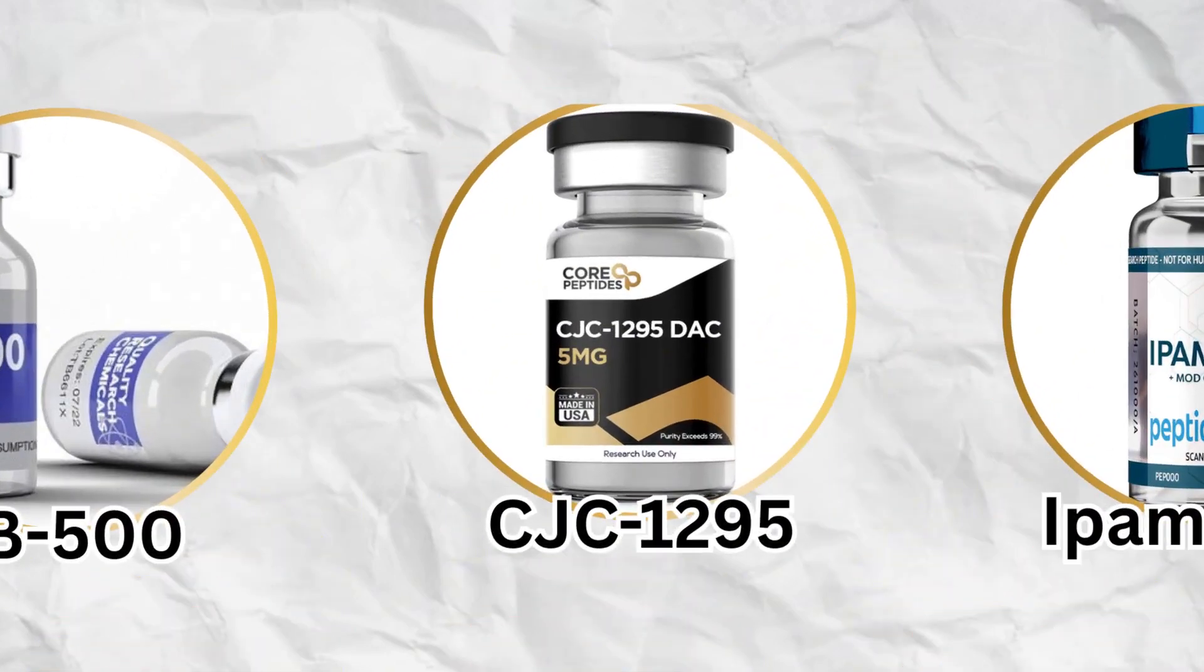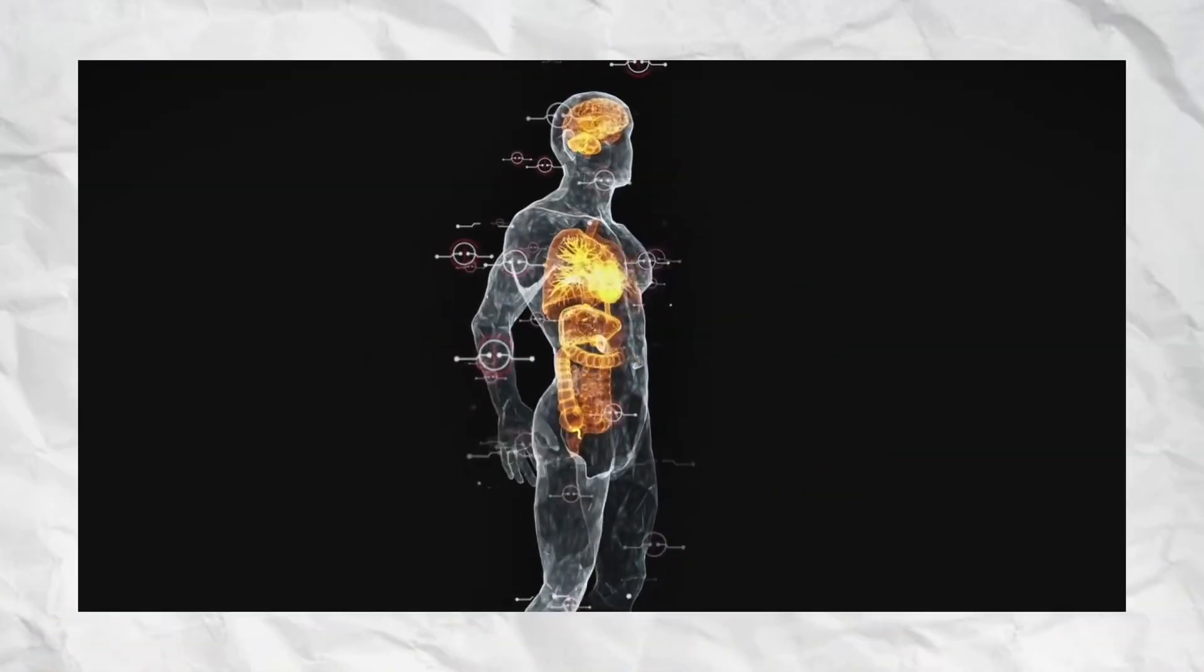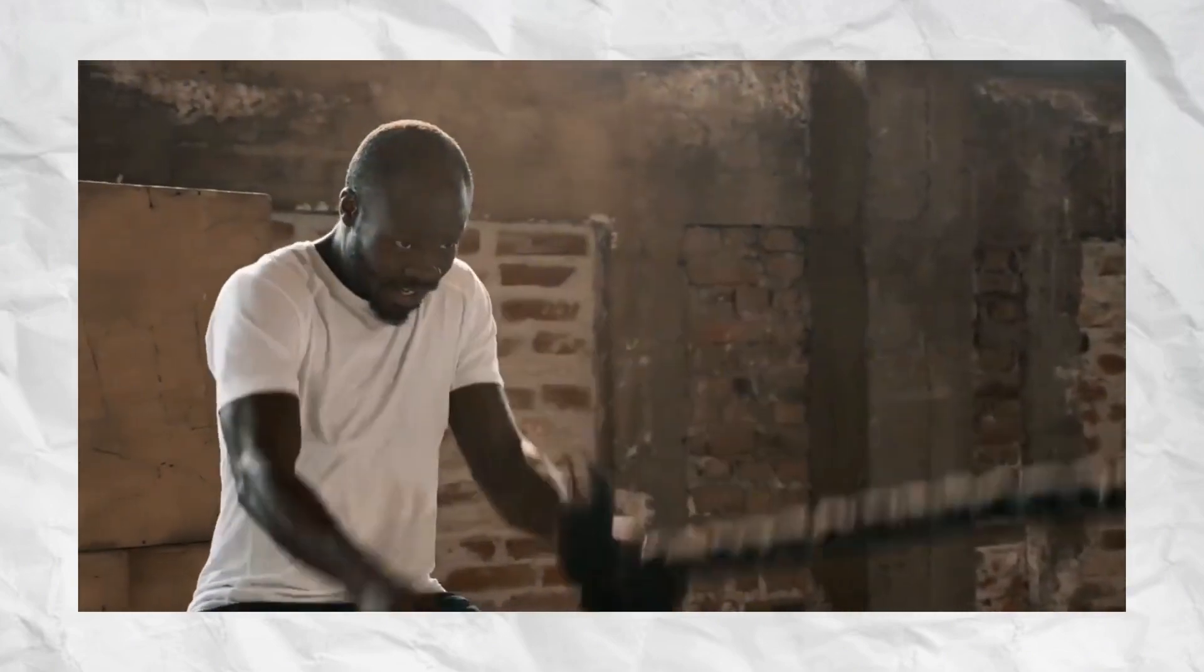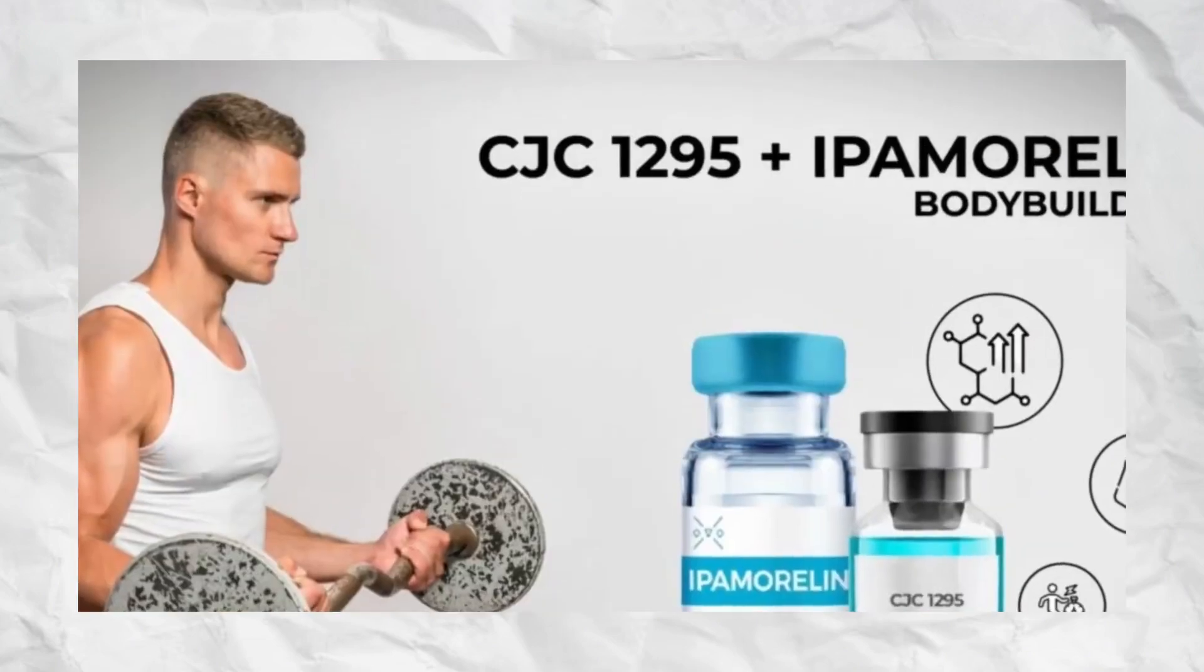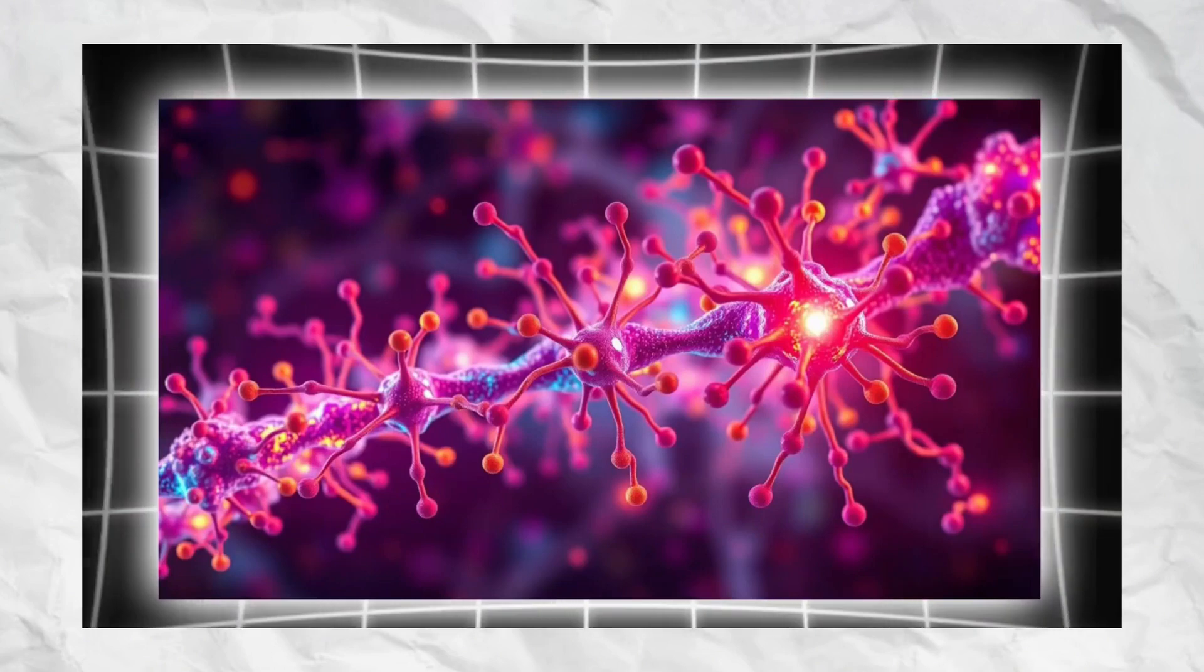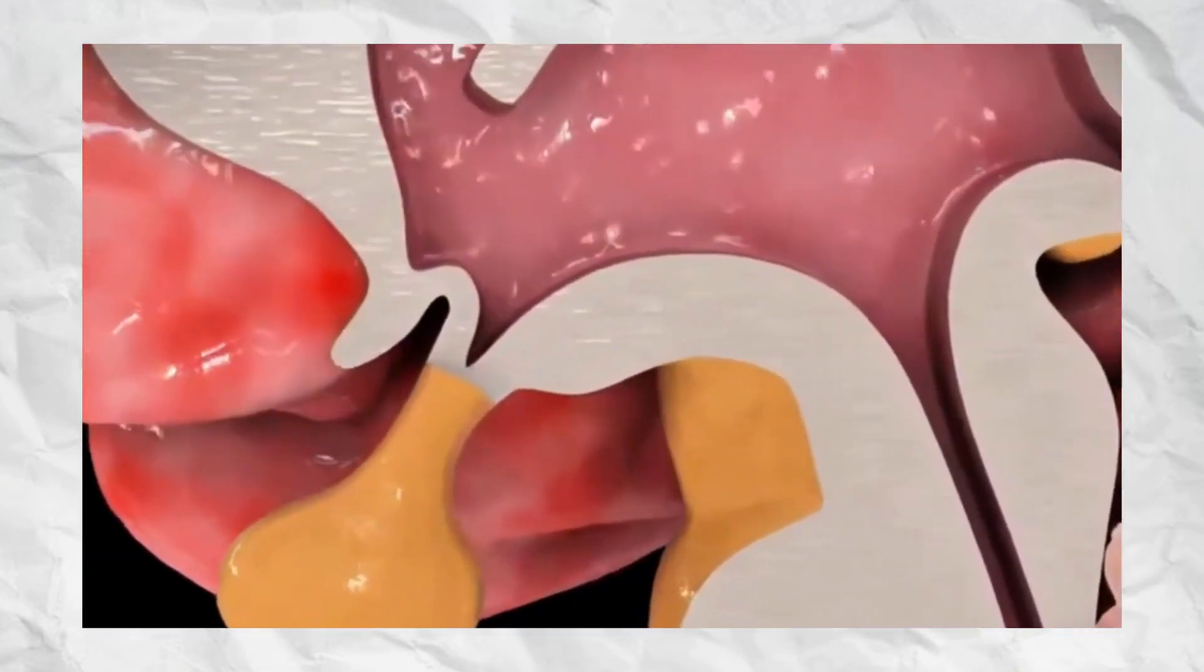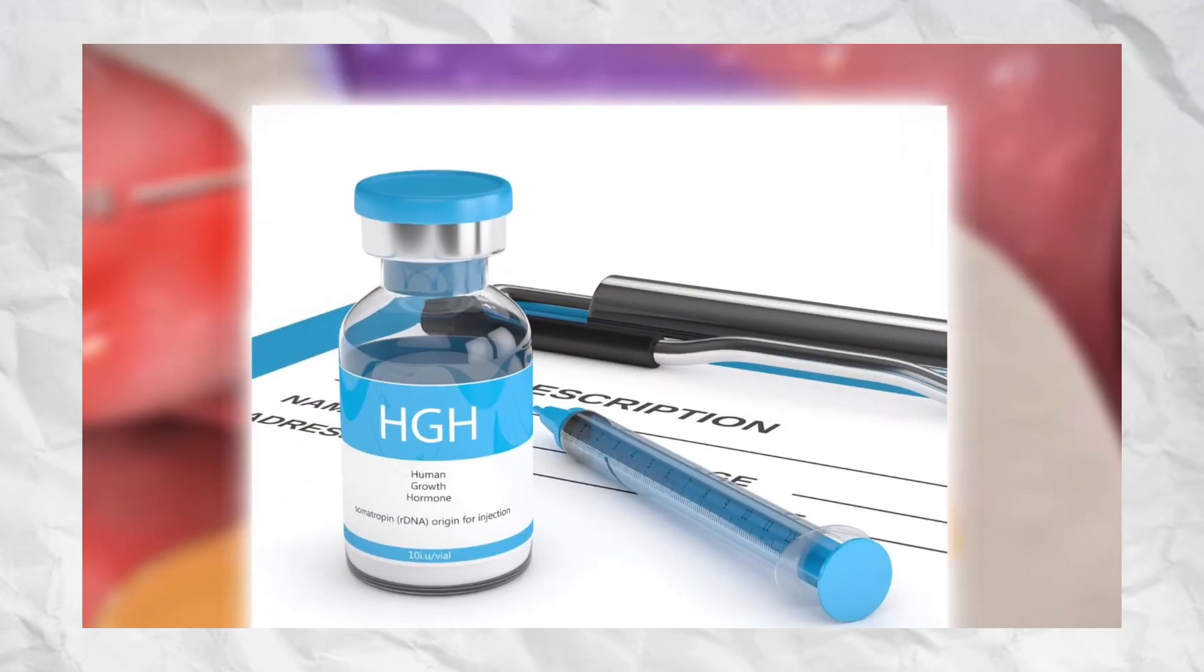CJC-1295 is a synthetic peptide designed to stimulate the body's natural release of growth hormone by mimicking growth hormone-releasing hormone, GHRH. It binds to GHRH receptors in the pituitary gland, triggering GH secretion and indirectly raising insulin-like growth factor 1, IGF-1 levels.